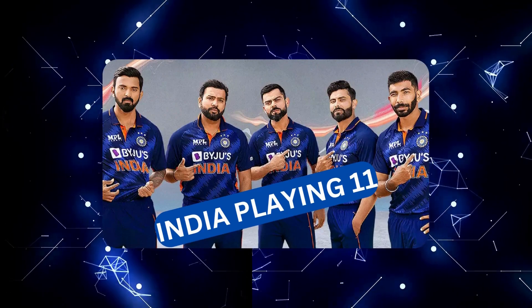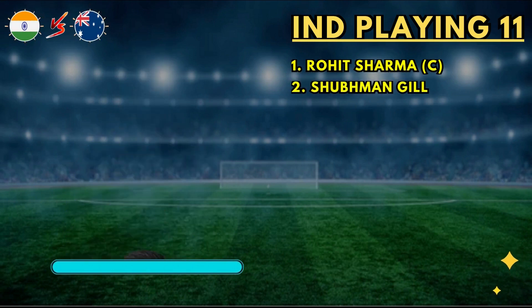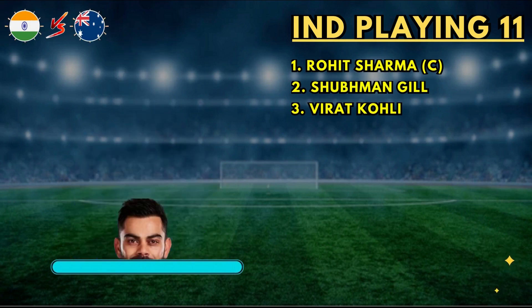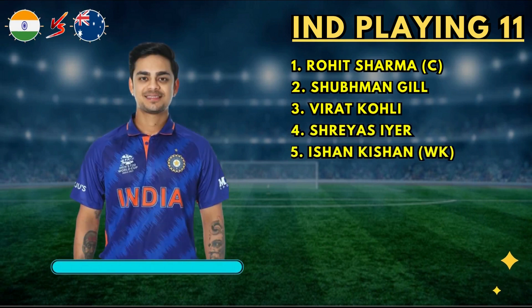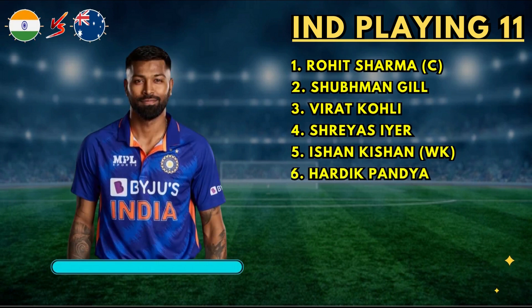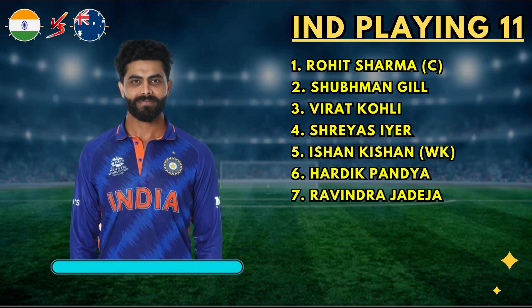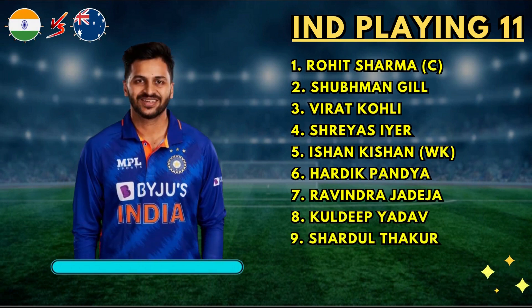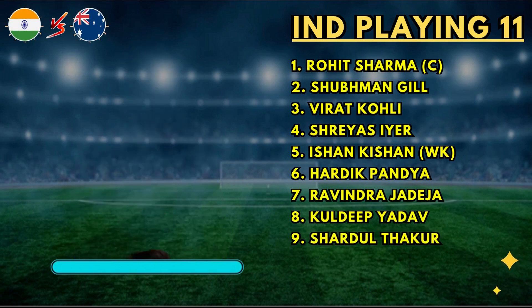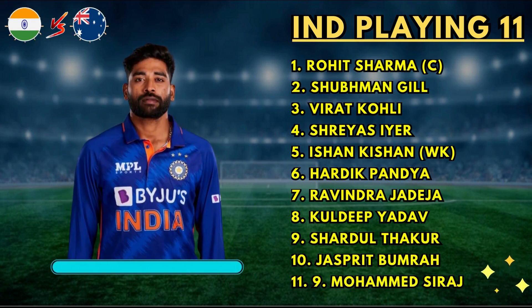India best playing 11: No.1 Rohit Sharma (Captain and batsman), No.2 Shubman Gill, No.3 Virat Kohli, No.4 Shreyas Iyer, No.5 Ishan Kishan, No.6 Hardik Pandya, No.7 Ravindra Jadeja, No.8 Kuldeep Yadav, No.9 Shardul Thakur, No.10 Jasprit Bumrah, No.11 Mohammed Siraj.